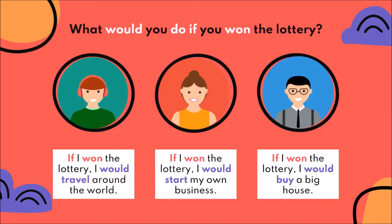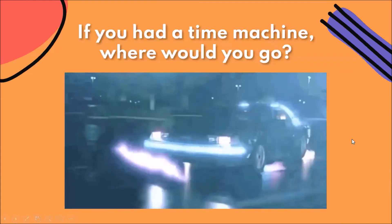And finally, this man says: if I won the lottery, I would buy a big house. As you can see, they all start saying the same thing — if I won the lottery, I would. So if they won the lottery, they would have a lot of money. The answer changes: he would travel, she would start her own business, and he would buy a big house. But the condition is the same for all of them: if they won the lottery.